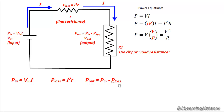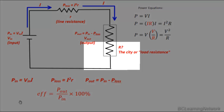The only thing left is efficiency. When we talk about efficiency, we're comparing the output to the input. So efficiency equals output power divided by input power. Those are our equations for transmission lines.